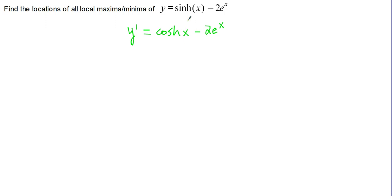So to find the local max and min, we need to figure out when this is undefined. Well, cosh of x is defined for all real values of x, as well as e to the x. So there's no places where it's undefined, but we'll figure out when it is equal to 0.